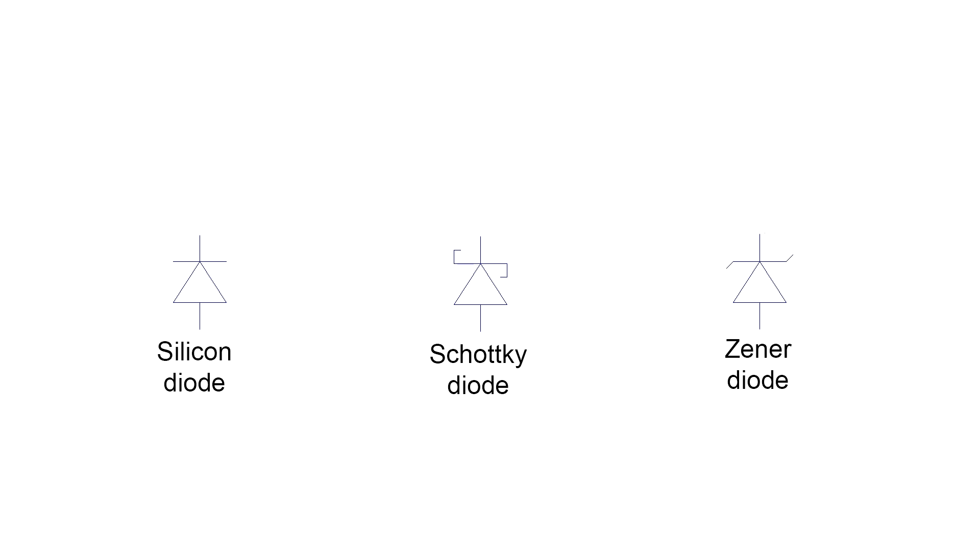The first thing to know is that the circuit symbol for Zener Diodes looks very similar to the other diode symbols. Make sure you don't get them confused because they behave very differently and they're used for very different things.